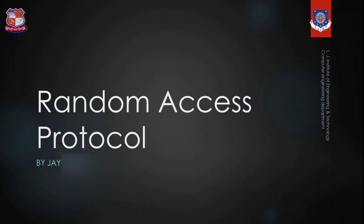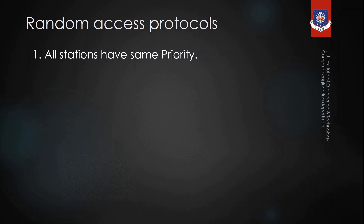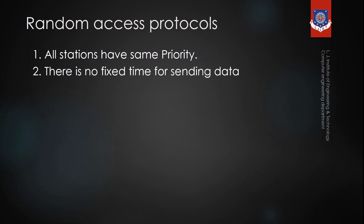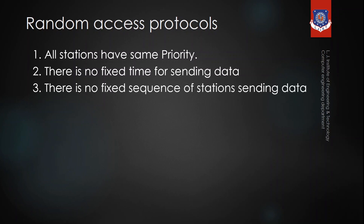The multiple access protocol has three types: random access protocol, control access protocol, and channelization. In the random access protocol, all the stations in the network have the same priority — there is no master and no slave, there is no fixed time for sending data, and there is no sequence for sending data. Each station can send data whenever they have data to send.